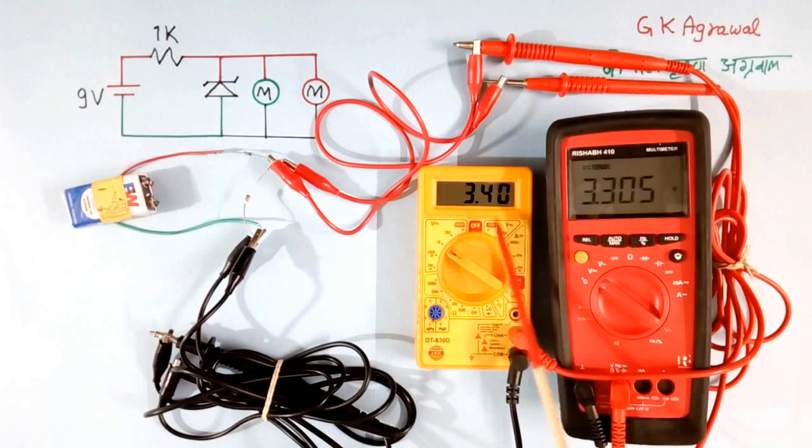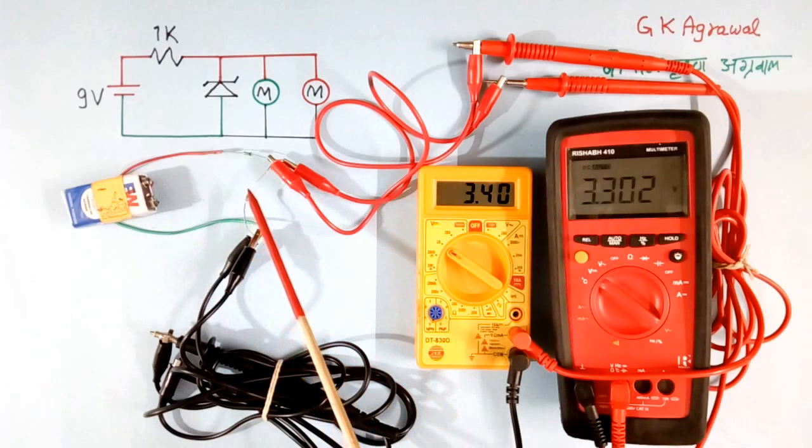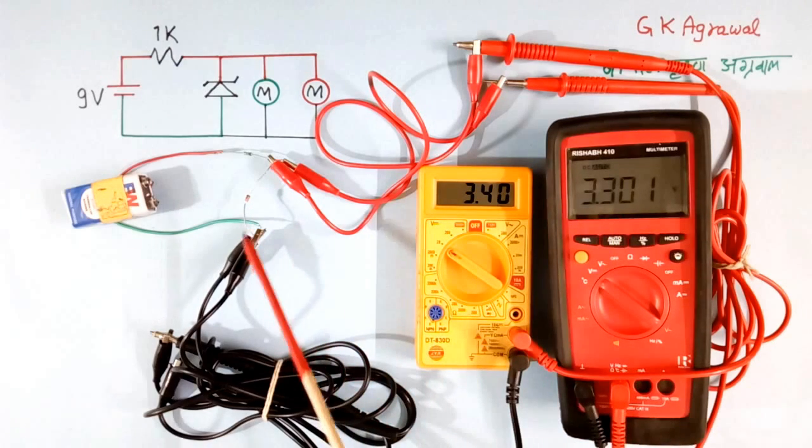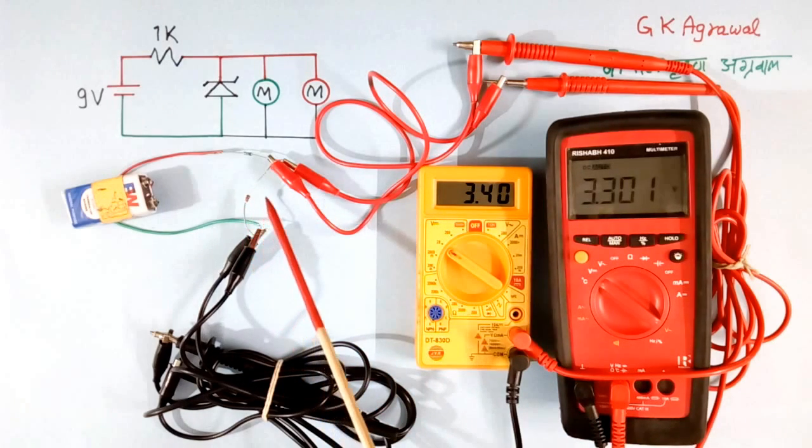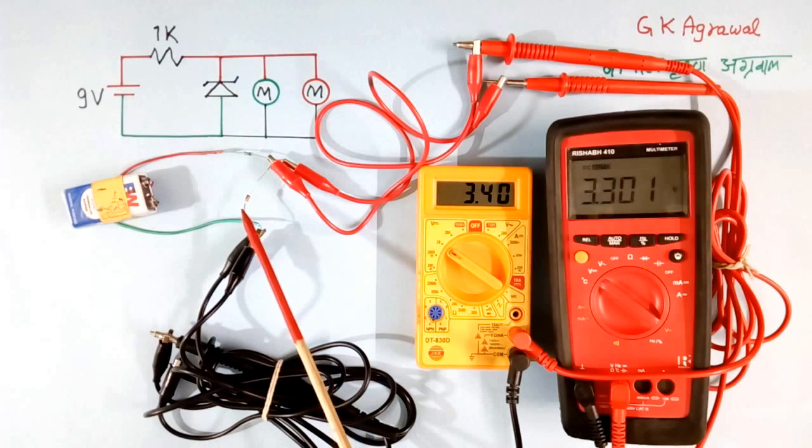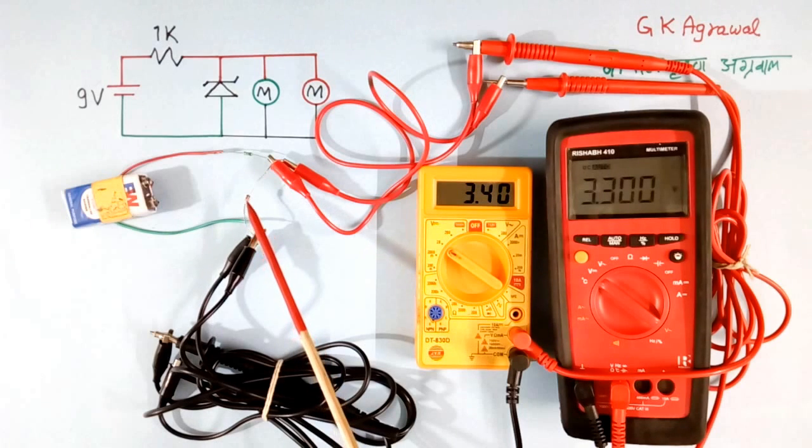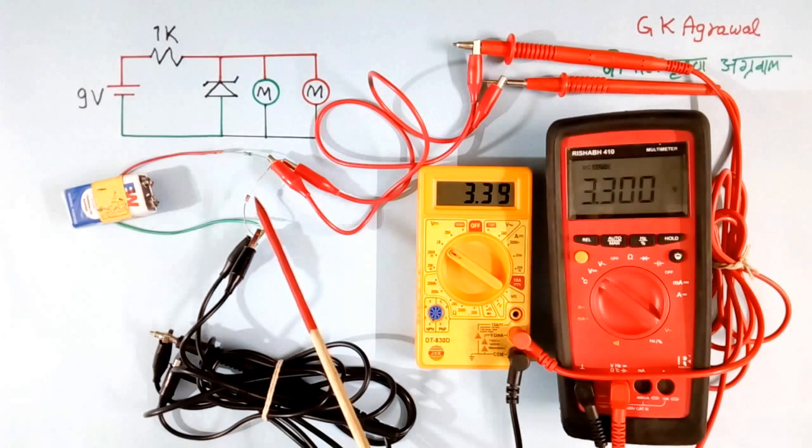This multimeter is reading 3.4 volts. This is reading 3.3 volts. So this multimeter is reading more accurately. This is reading a little higher value. But if you know that your multimeter reads higher values, you can always find the correct value. So Zener diode voltage is 3.3 volts. When you buy from the market, they may write 3.3 volts, but the Zener diode will have some tolerance, so the value may not come exact. It may have a little different value.